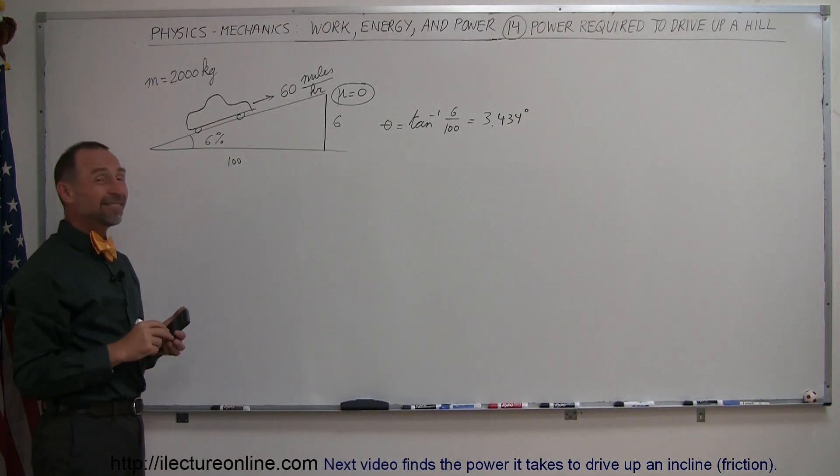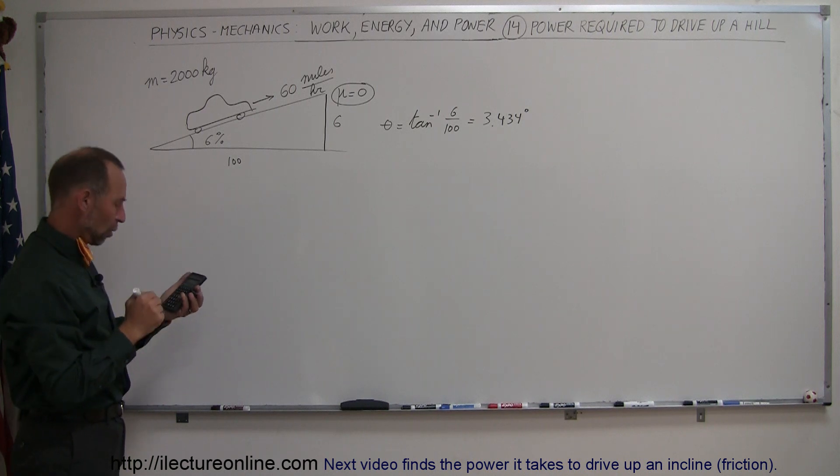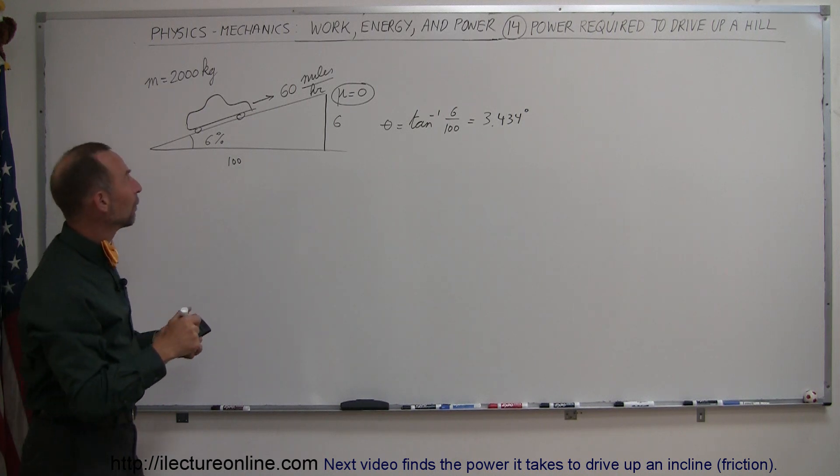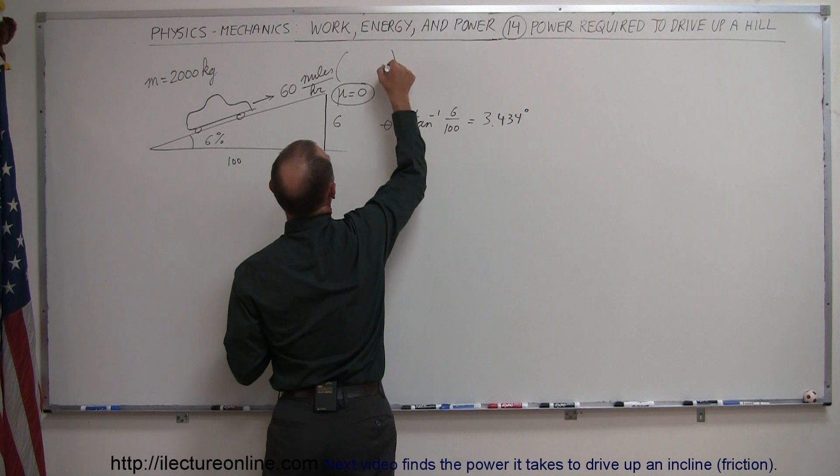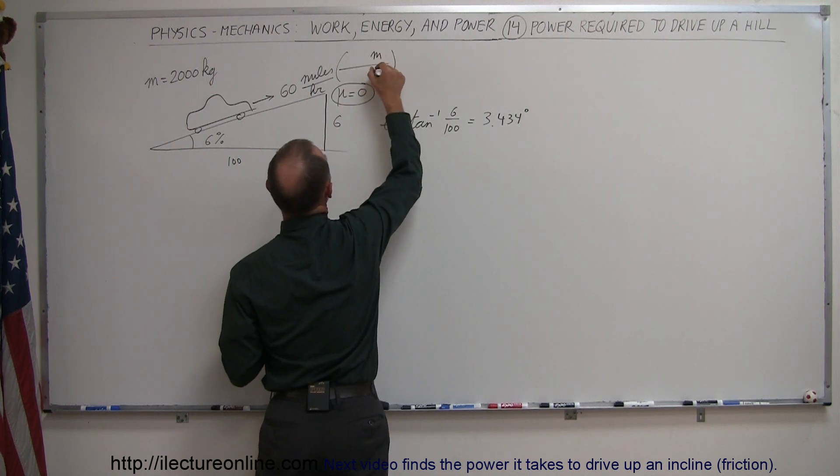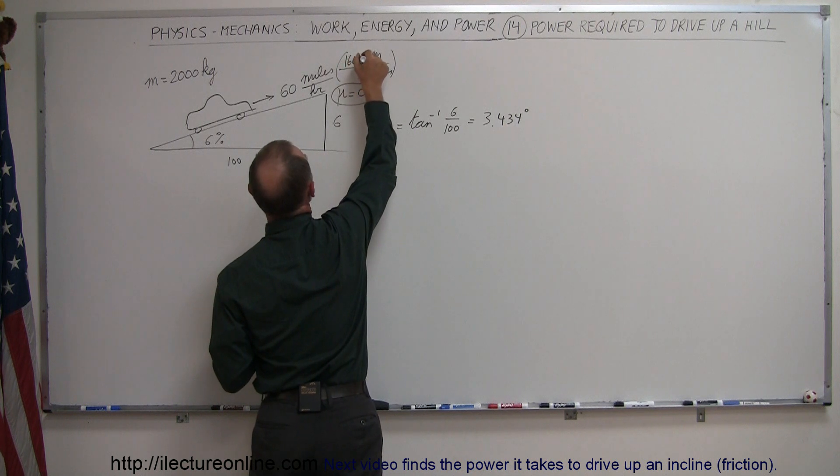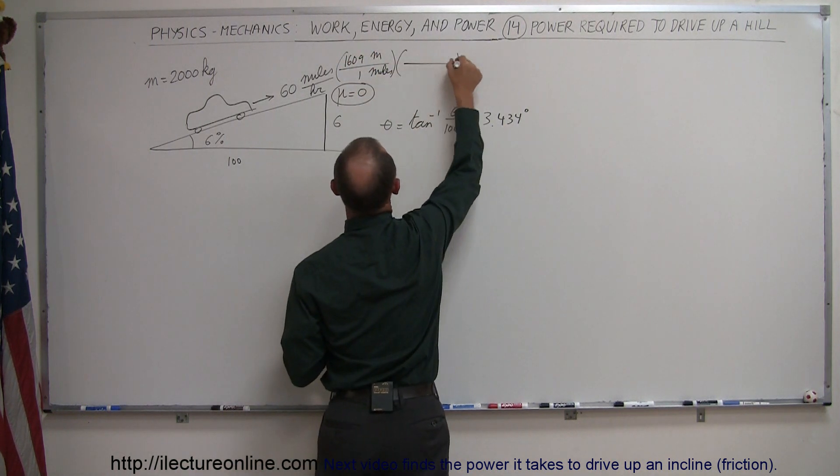Now 60 miles per hour, let's convert that to meters per second. So we take 60, and we first have to convert that from miles to meters. So one mile is 1609 meters, and now from hours to seconds.